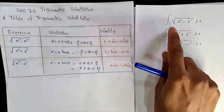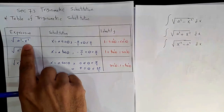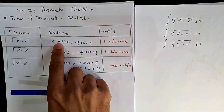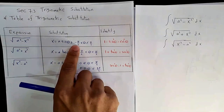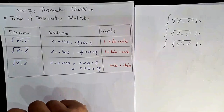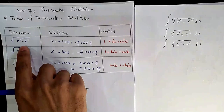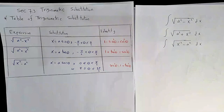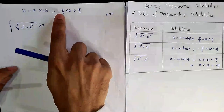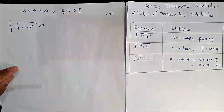For example, the first one, root(a²-x²), we need to use the substitution x = a sin θ, where θ is between -π/2 and π/2, closed interval.